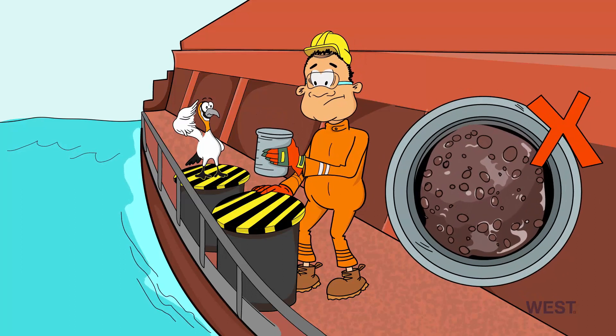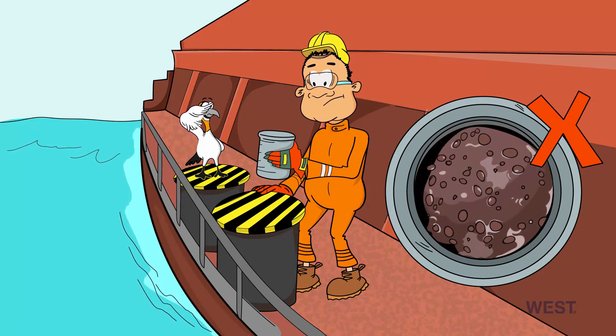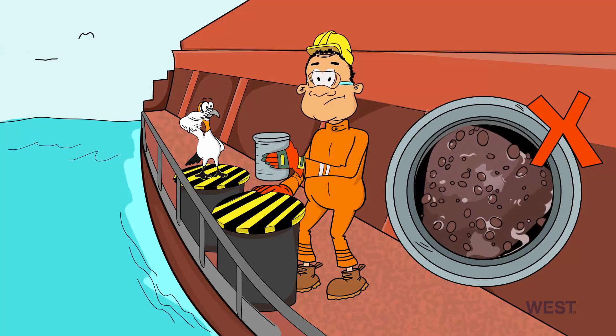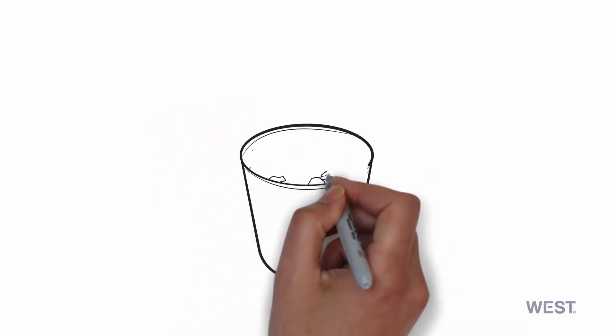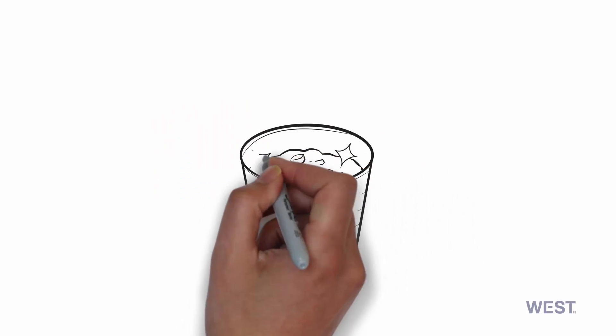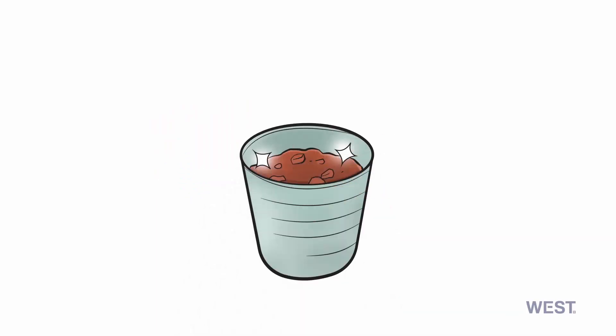Here is an example of a clearly failed can test. As seen, moisture is clearly visible. There shouldn't be any visible moisture in the can. Even a shiny appearance is a sign of possible moisture. If in doubt, consult with your P&I club.